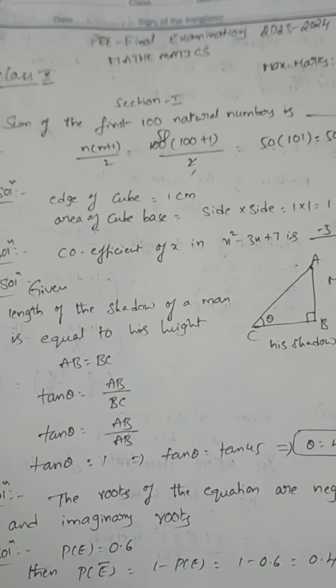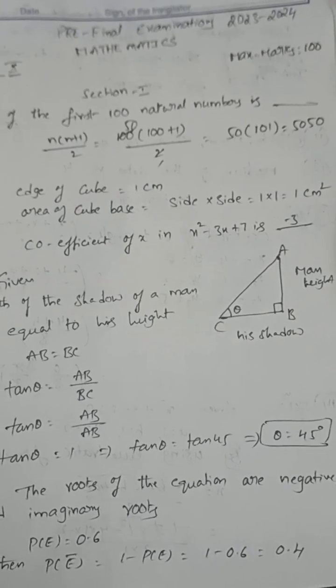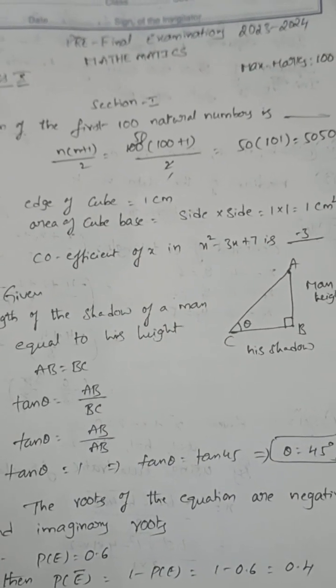Next, edge of cube is 1 centimeter. They're asking the area of the cube base. The cube base is square, so area is side times side, that is 1 times 1, equal to 1 centimeter square. Quotient of x in x² - 3x + 7, the quotient is -3.